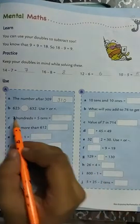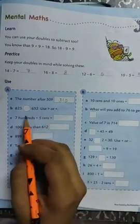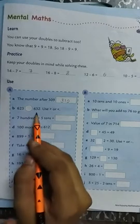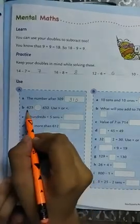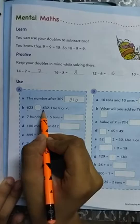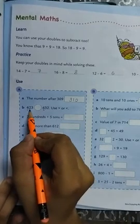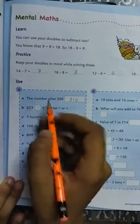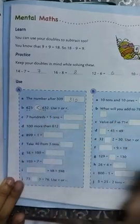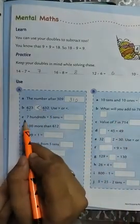Next question, here we have to compare which is the bigger number. Look here, 623 or 632? 632 is bigger. In the hundreds place, 6 and 6 is there. In the tens place, 2 and 3. 3 is bigger.